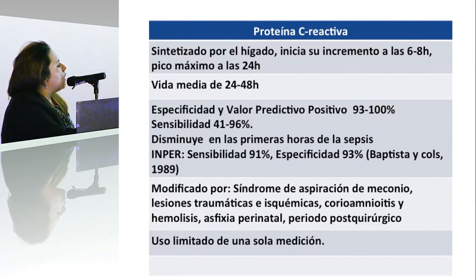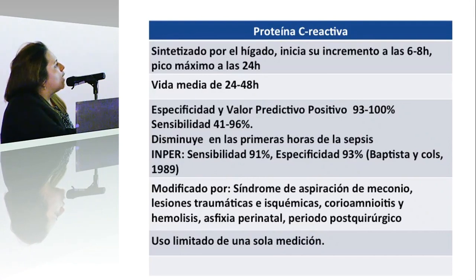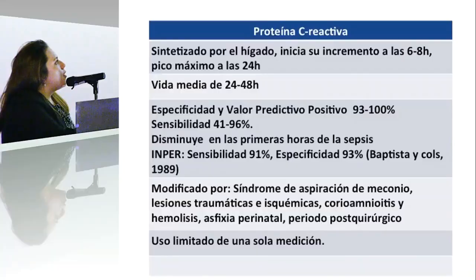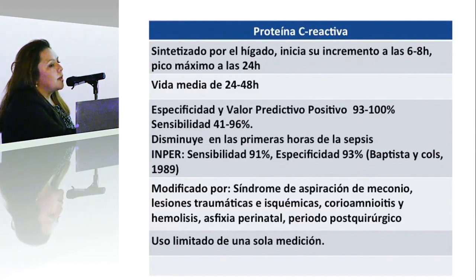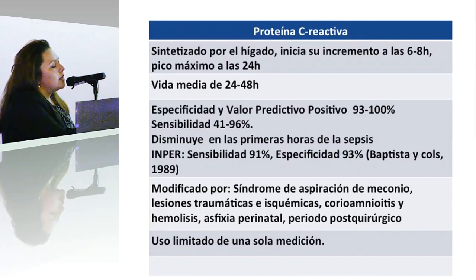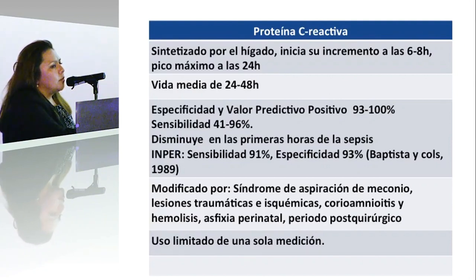La PCR puede ser modificada por diferentes comorbilidades como síndrome de aspiración de meconio, lesiones traumáticas e isquémicas, corioamnionitis, hemólisis, asfixia perinatal y periodo posquirúrgico. Entonces el uso de la proteína C-reactiva nos dice que hay un proceso inflamatorio que puede ser sepsis, pero no es específico. Una sola medición no nos sirve; lo mejor es tomar mediciones seriadas para ver si efectivamente hay un incremento y descartar que la cifra elevada no se debe a alteraciones perinatales.